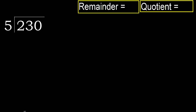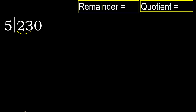230 divided by 5. 2 is less than 5, therefore move to the next digit. 23 is not less than 5, therefore we work with 23.